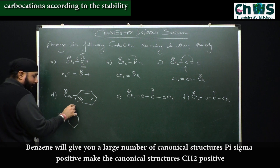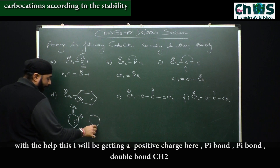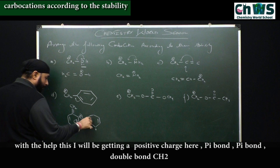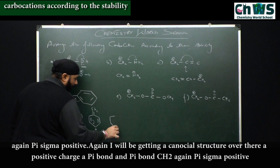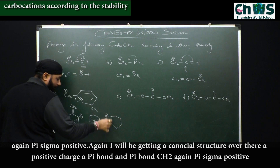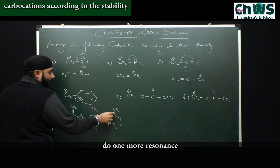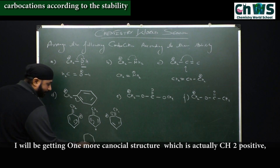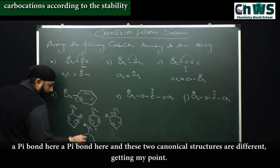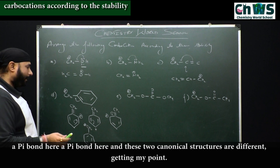Making the canonical structure: CH2(+) — positive charge comes over here. Pi sigma positive again: resonance gives a positive charge here, then a pi bond, pi bond, CH2. Again pi sigma positive gives one more canonical structure with a positive charge and pi bonds. Doing one more resonance gives CH2(+) with a pi bond here, a pi bond here, a pi bond here. These two canonical structures are different — check the position of pi bonds. So five canonical structures total for benzyl carbocation.